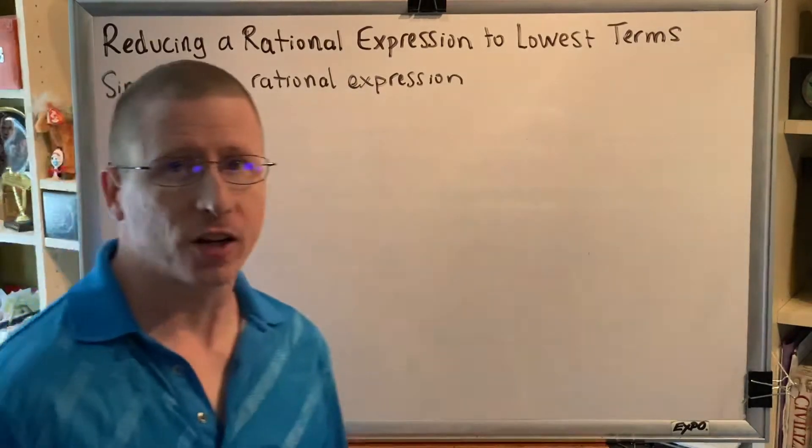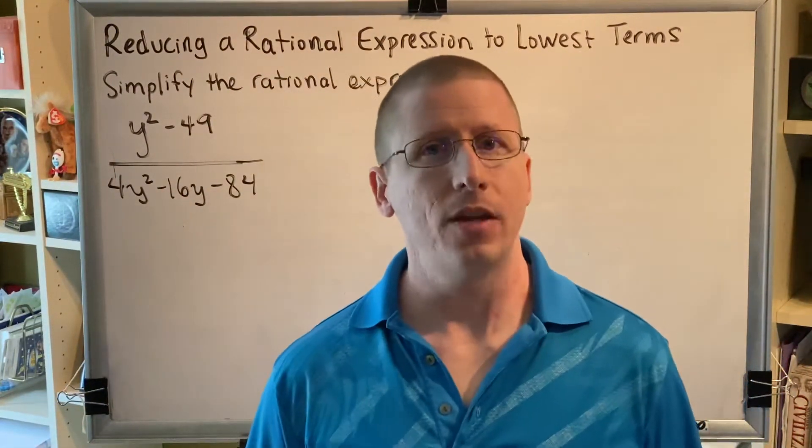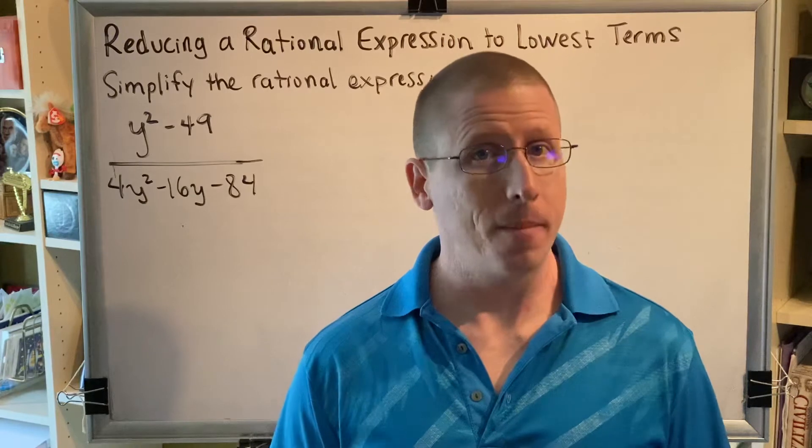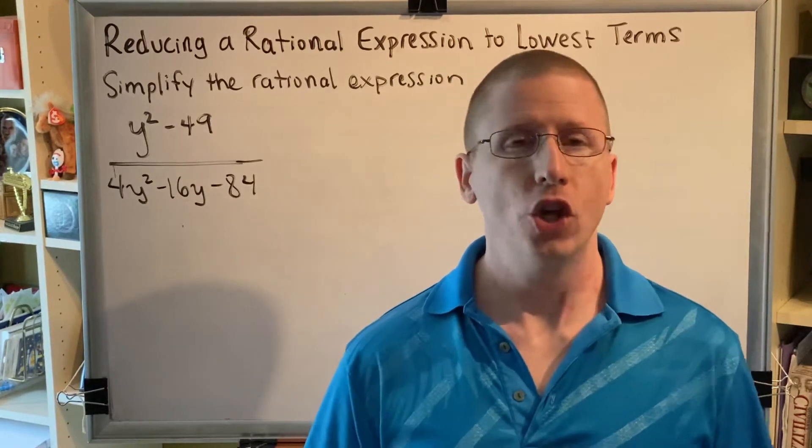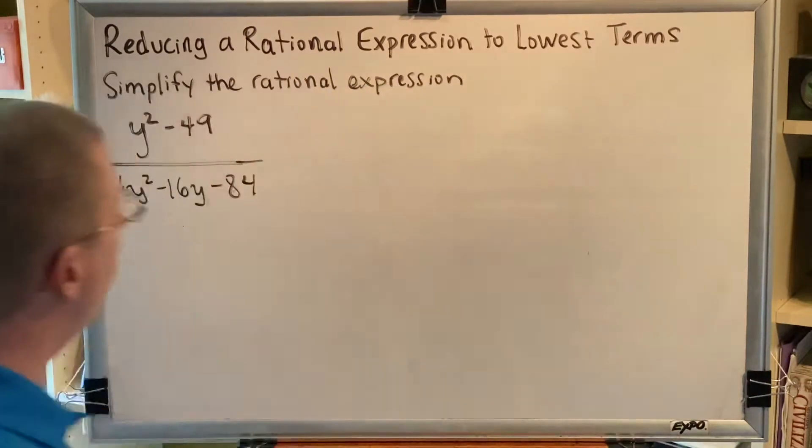The first step is to factor all of the numerators and the denominators, and then the second step is to look for factors that match top and bottom so that we can cancel those to the number 1. So let's go ahead and begin.